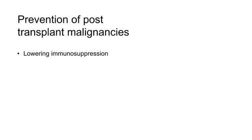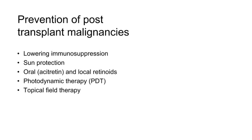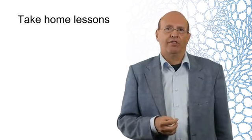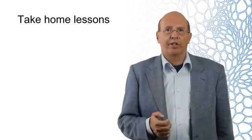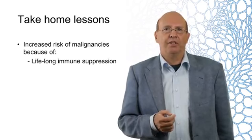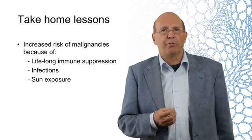Since sun exposure plays a major role in the development of cutaneous squamous cell carcinoma, sun protection is very important. Other ways to decrease the risk of skin cancers are oral and local retinoids, photodynamic therapy, and topical treatment of the field areas. Skin cancers themselves can be treated with surgical excision and sometimes radiotherapy. In summary, we have seen some important drawbacks and challenges after organ transplantation. Renal transplant recipients have an increased risk of malignancies because of lifelong immunosuppression, increased risk of infection — especially viruses — and for skin malignancies, sun exposure also plays a major role. For prevention, sun protection is very important.